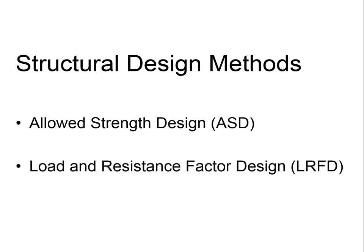Allowable strength design was the only method we had until about 30 years ago. At some point, a new method called load and resistance factor design was developed, which accounts for the fact that we have far greater uncertainty in certain kinds of loads than others. For example, live loads or wind loads are less predictable than the dead weight of the structure itself. The LRFD method has taken over a large part of the design field, though both systems continue to compete. In the steel industry, LRFD is preferred in academia and among design professionals generating building designs.